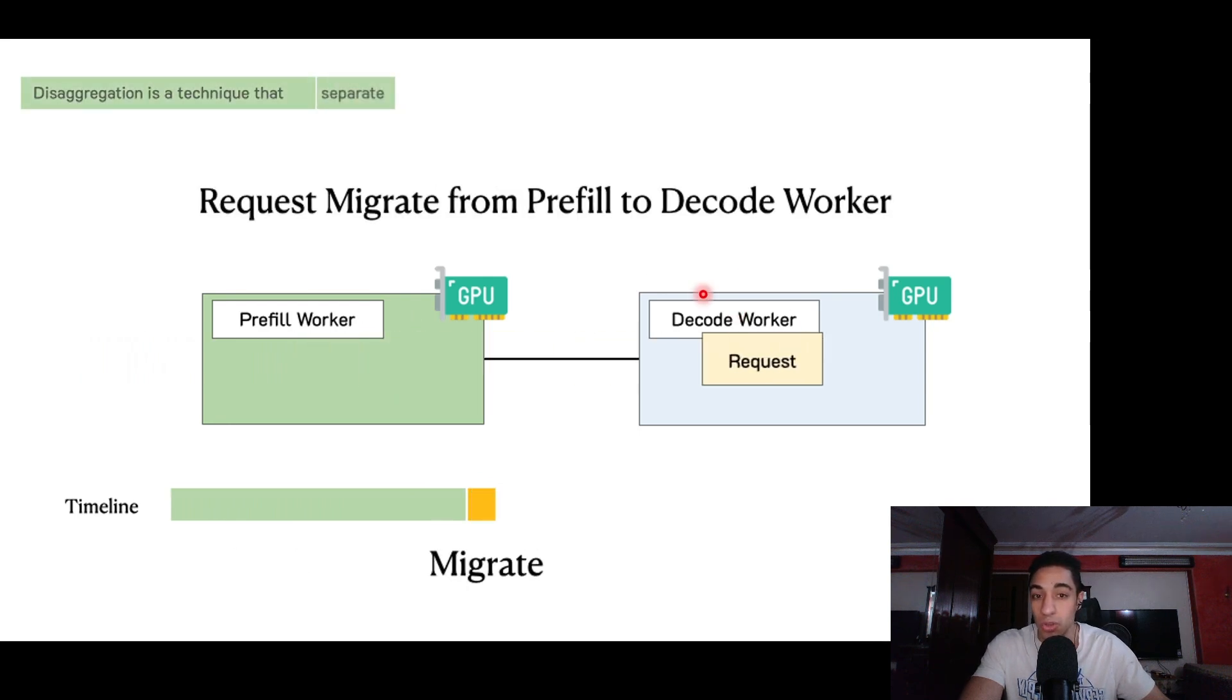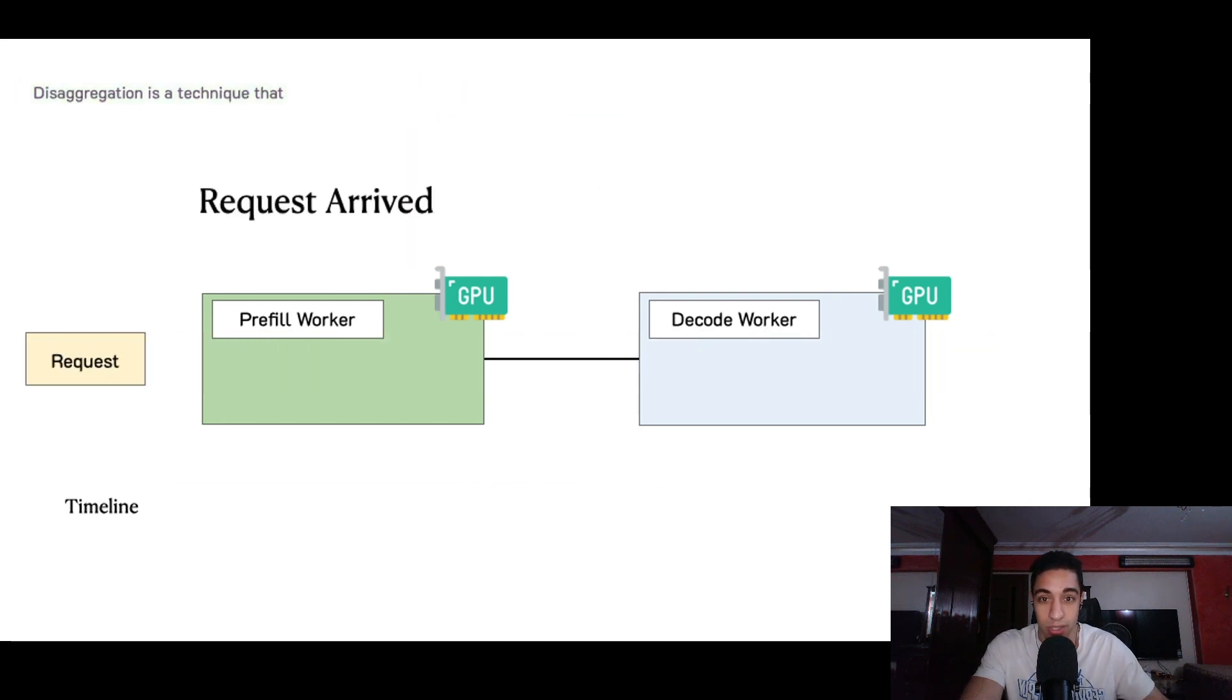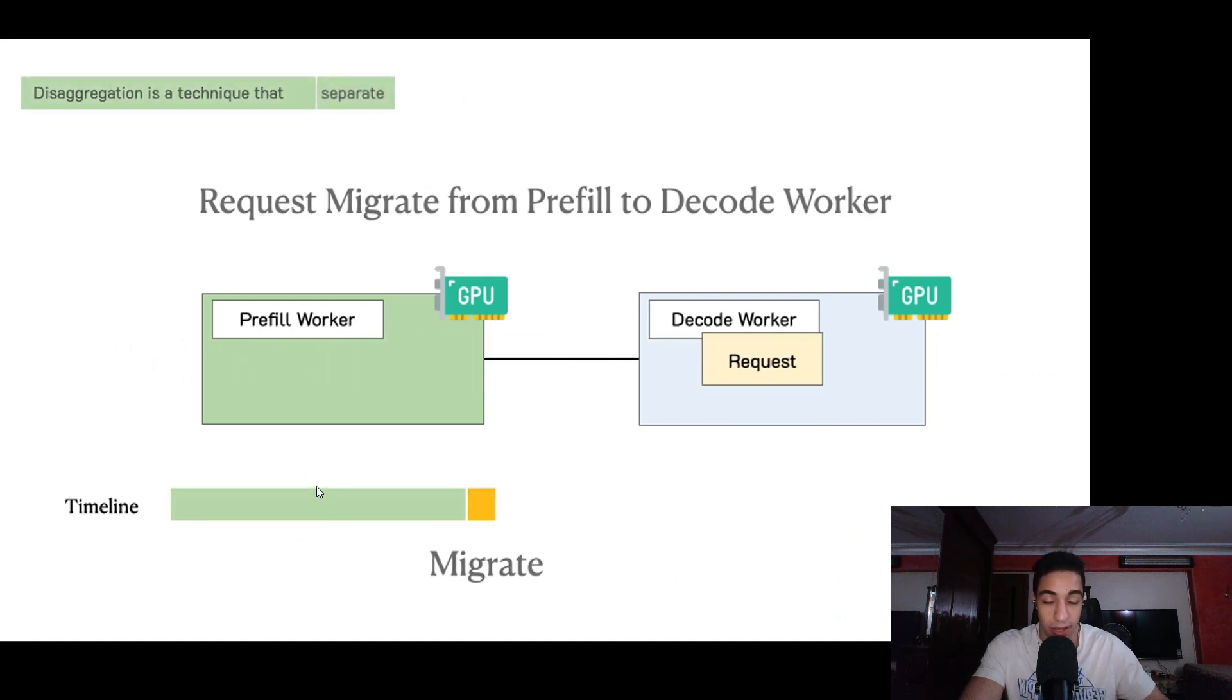Then we go into the next phase, which is the decode phase. This phase happens autoregressively, which means each token is being generated one by one. A general theme is that the prefill phase can happen in parallel since all your input tokens are known.